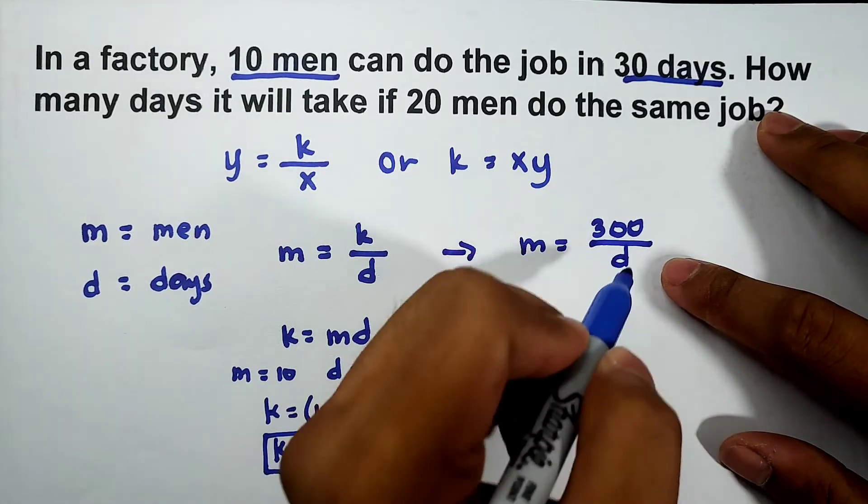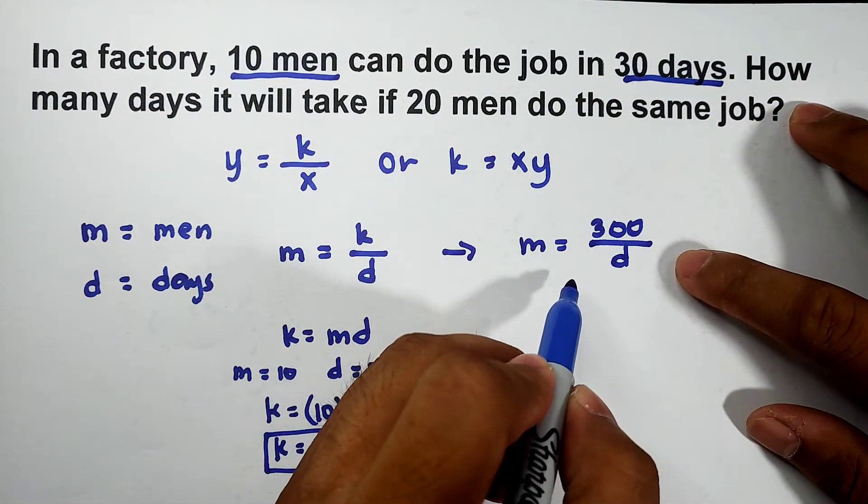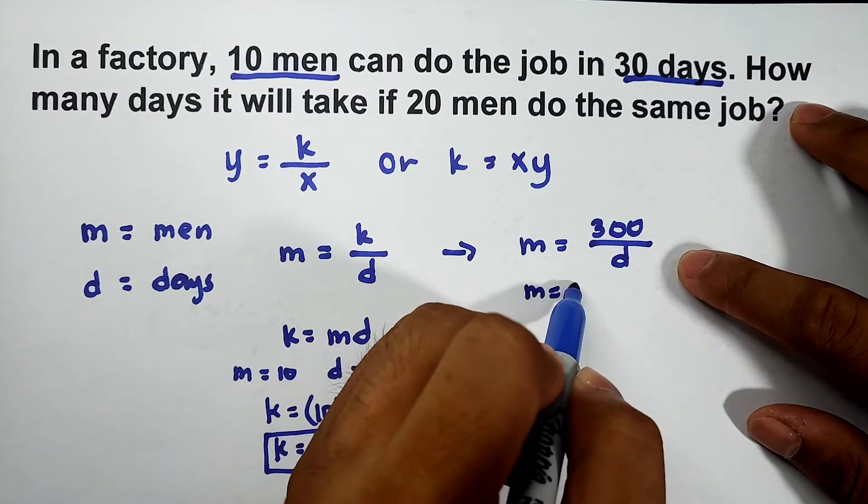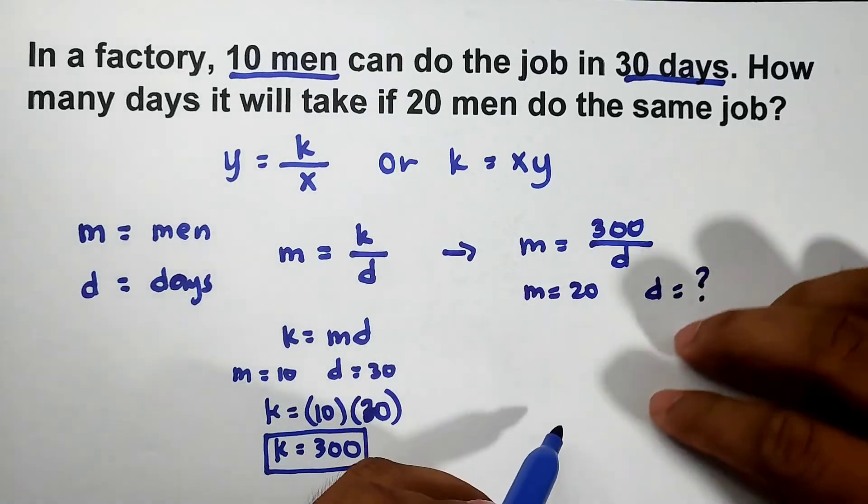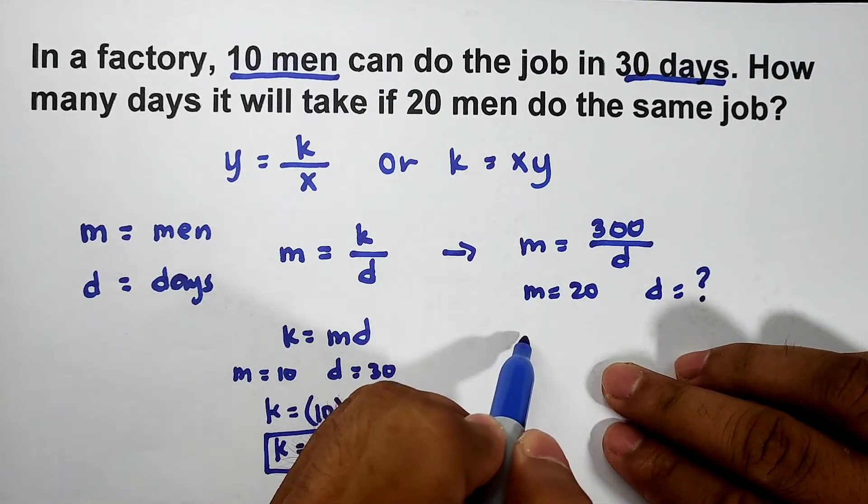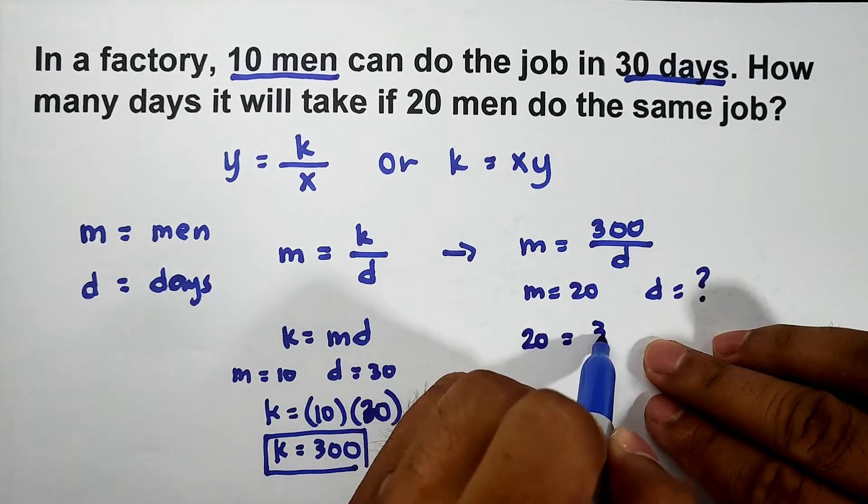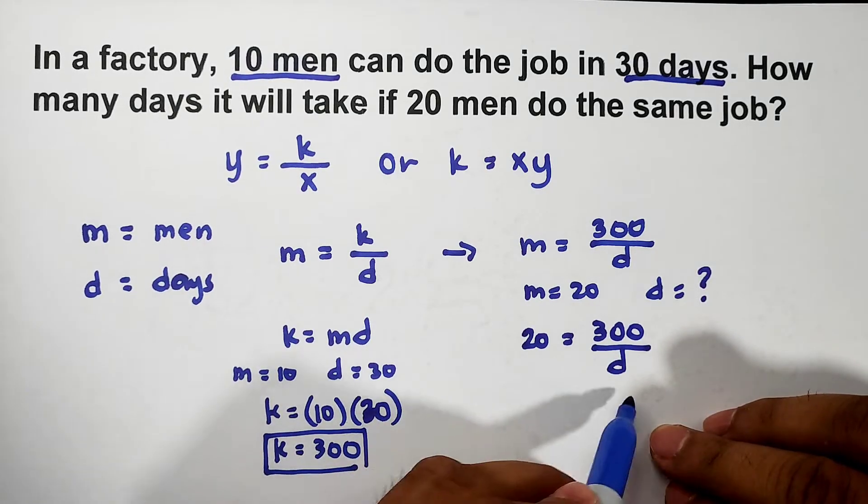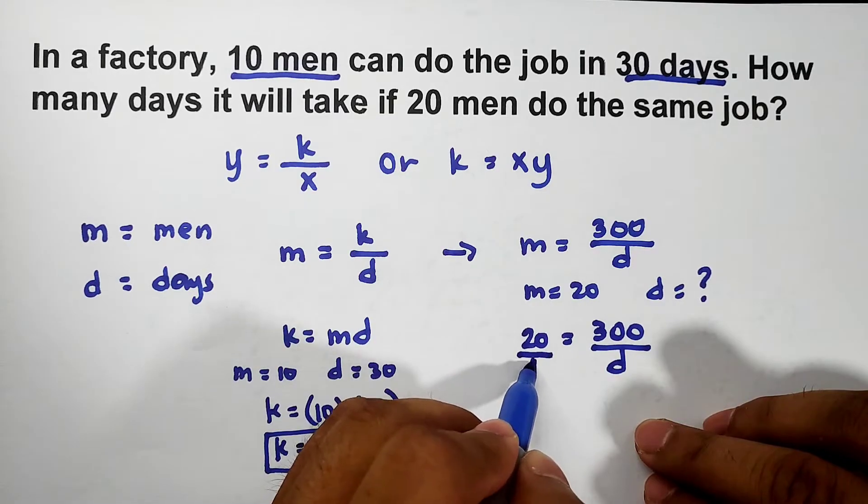So sagutin na natin to. Dito, how many days if 20 men? So yung m natin is 20, yung d natin ang nawawala. To solve that, gawin natin dito, palitan natin yung m natin. 20 using this formula is equal to 300/d. Okay, cross multiply natin, gawin natin itong fraction.